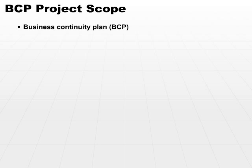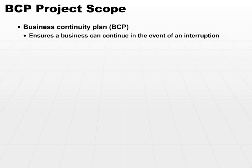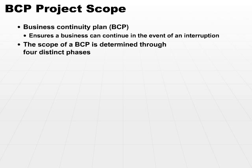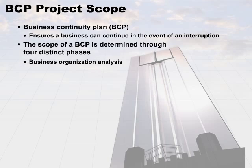Let's take a look at the project scope and planning for this large plan. It's an important plan — it ensures a business can continue in the event of an interruption. The scope of a BCP is determined through four distinct phases. We have to start with a business organization analysis.